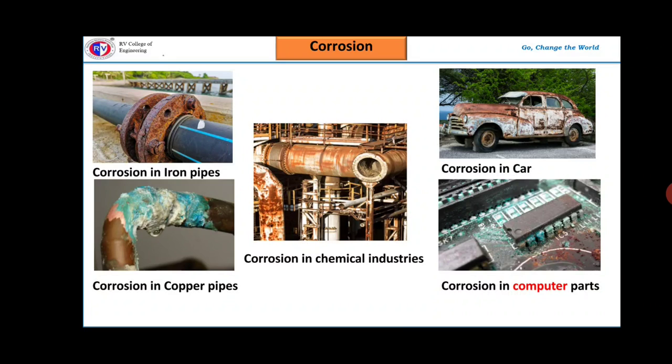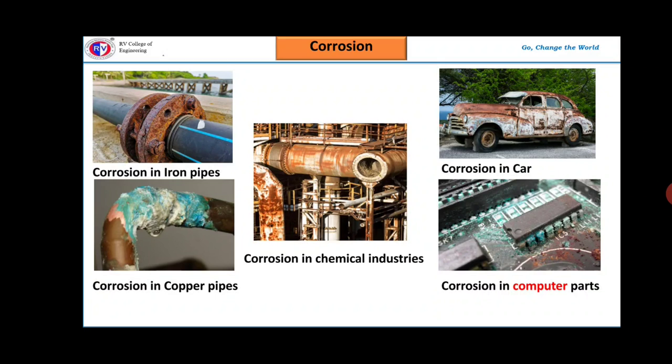Corrosion is quite common in most of the industries. For example, chemical industries. Corrosion occurs even in cars as well as computer parts also.